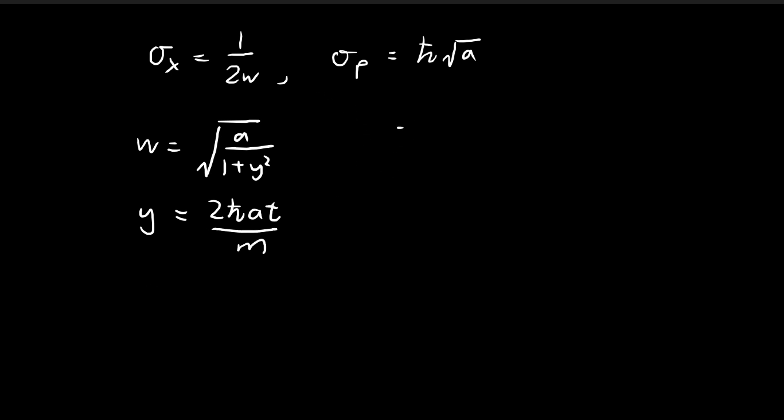Now we need to check the uncertainty principle. That means checking that this product must be larger than or equal to ℏ divided by 2.